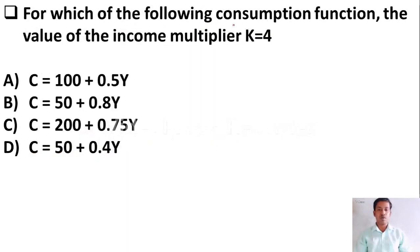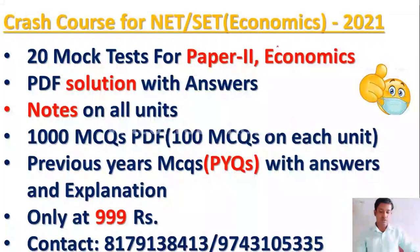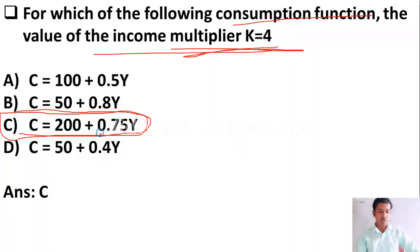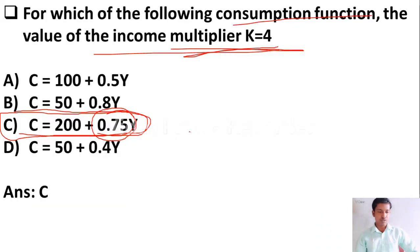The next question: for which of the following consumption functions is the value of the income multiplier 4? The right answer is Option C — when consumption C equals 200 plus 0.75Y. The income multiplier K equals 1 divided by (1 minus MPC). The MPC value here is 0.75, so 1 divided by (1 minus 0.75) equals 1 divided by 0.25, giving a multiplier of 4. So the right answer is Option C.